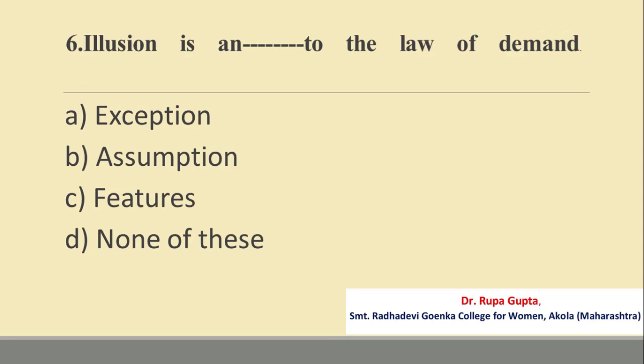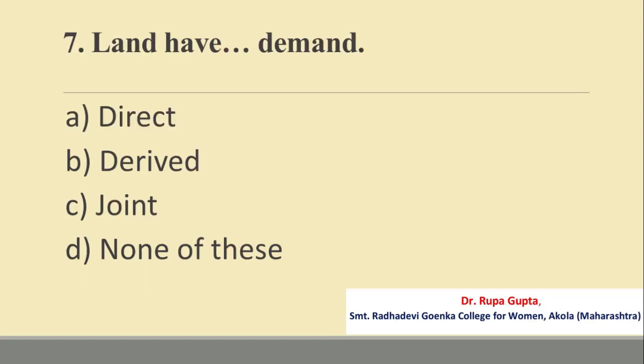Question number 6. Delusion is a dash to the law of demand. Options are: A. Exception, B. Assumption, C. Features, D. None of these. The answer is A, that is Exception.